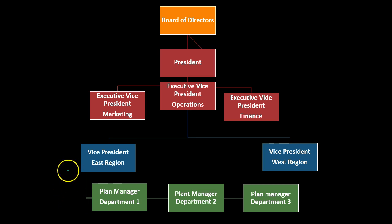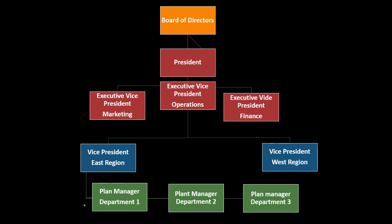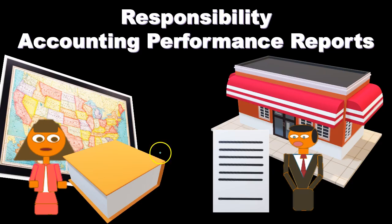As we move costs up to the vice president level, there may be less detail on a department-by-department basis, but the amount of controllable costs under the vice president's umbrella will increase. At the department level, there is more detail in the reports and the types of costs being controlled, but there are fewer controllable costs overall. As we go up the line, there is less detail but a broader, larger amount of controllable costs.